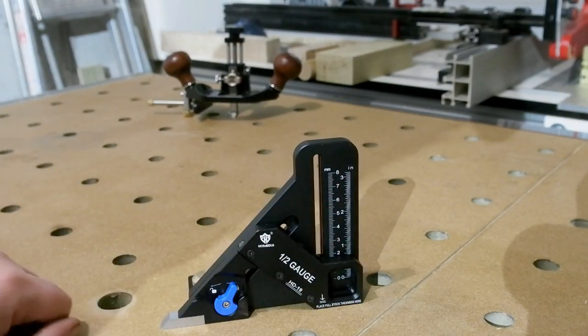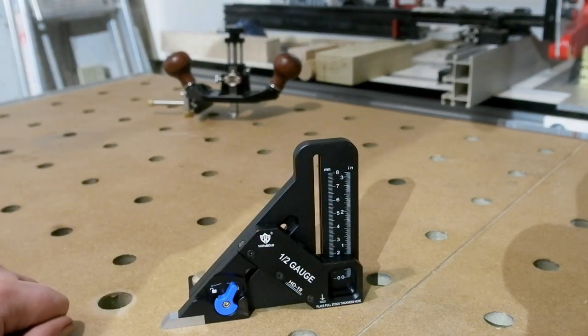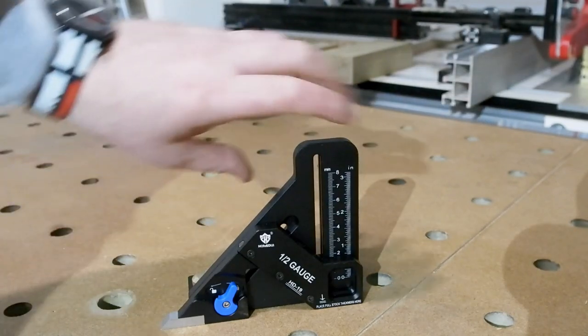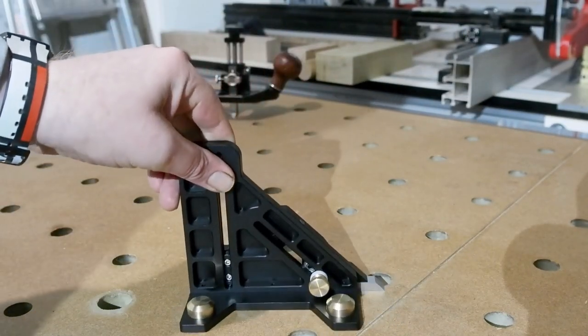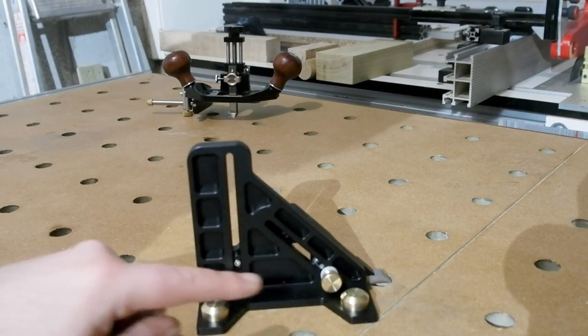On the right side there you can see the scale with metric left and imperial right. On the bottom left you can see the steel marking blade with a blue locking lever behind, more on that shortly.